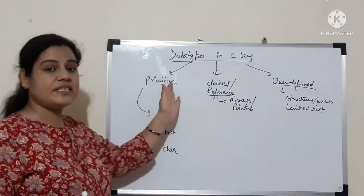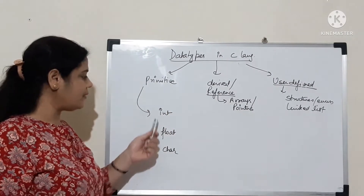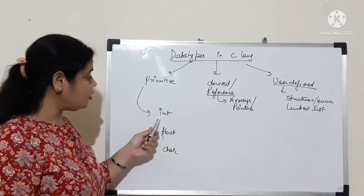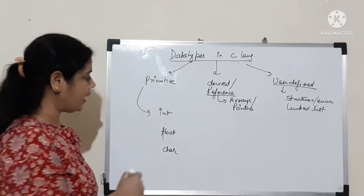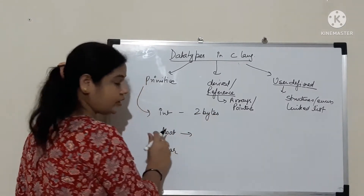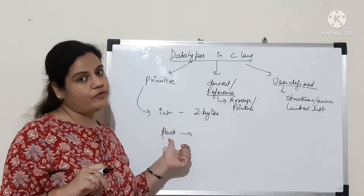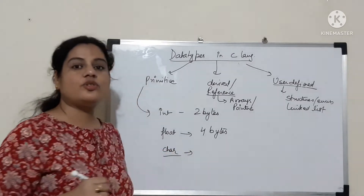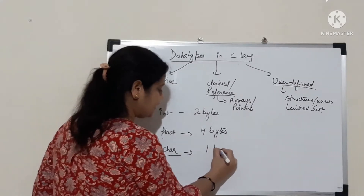Today we will discuss the primitive data types, which are of three types. First is integer data type — if you want to store a whole number with no decimal, you use the integer data type. 'int' is the keyword; it takes 2 bytes in memory. Float — if you want to store a decimal value, you use float data type, which takes 4 bytes in memory. Char — if you want to store a character, you use char data type, which takes a single byte in memory.